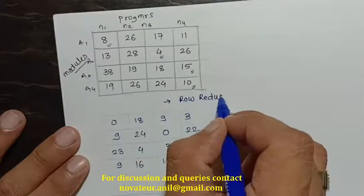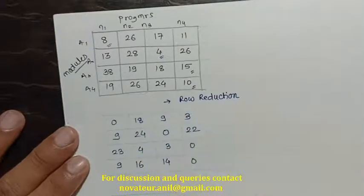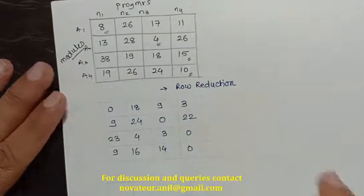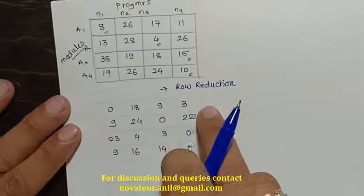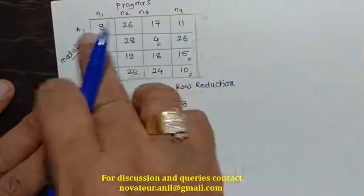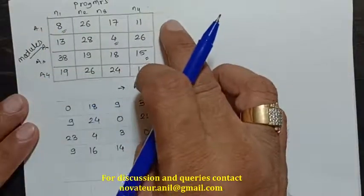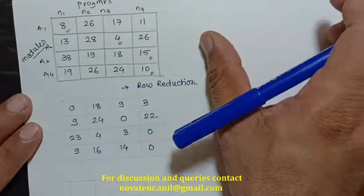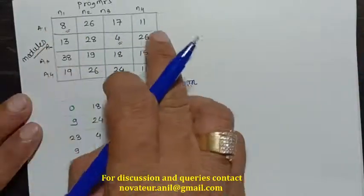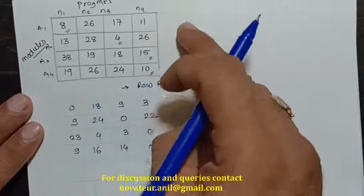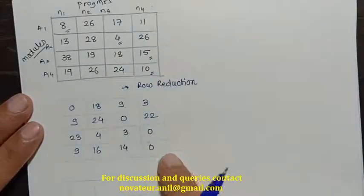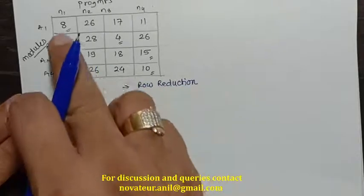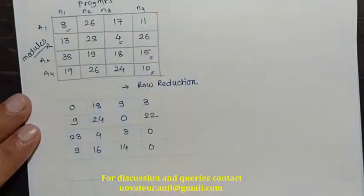To summarize row reduction: we identify the smallest element in each row — whether it is a 4×4, 5×5, or 6×6 matrix — and subtract it from the remaining elements. We process row 1 first, then row 2, row 3, and so on. The goal is to ensure at least one zero appears in each row after this step.